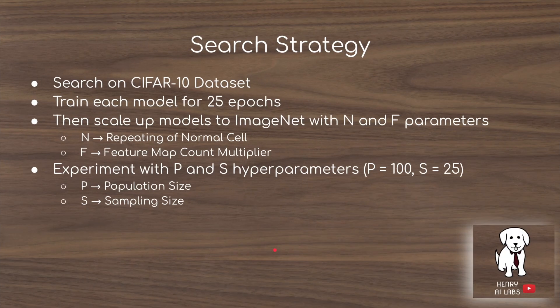The search strategy uses the CIFAR-10 dataset, which contains about 50,000 images and is much smaller than ImageNet. Each model is trained for 25 epochs, and then the best-performing models are scaled up to ImageNet using N and F parameters. N is the number of times the normal cell is repeated — so if N is 3, you get normal cell, normal cell, normal cell stacked.